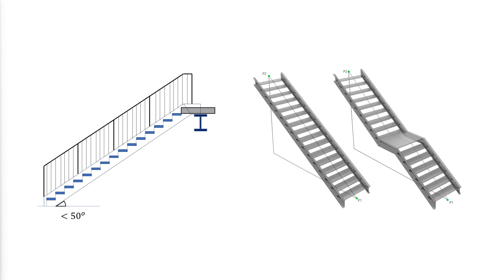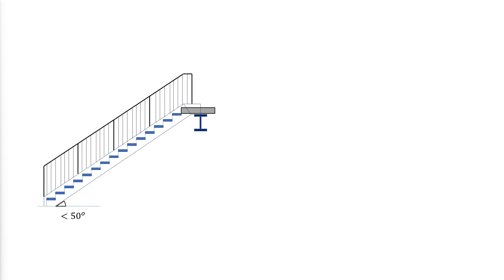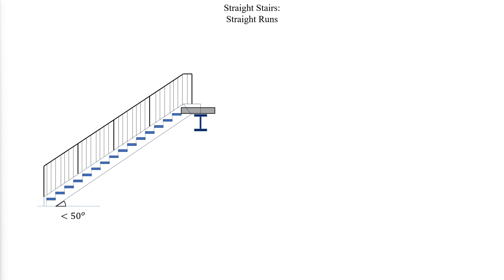Straight stairs may be arranged in several different ways. A straight run consists of either a single flight extending between floors, or a series of two or more flights in the same line with intermediate platforms between them.